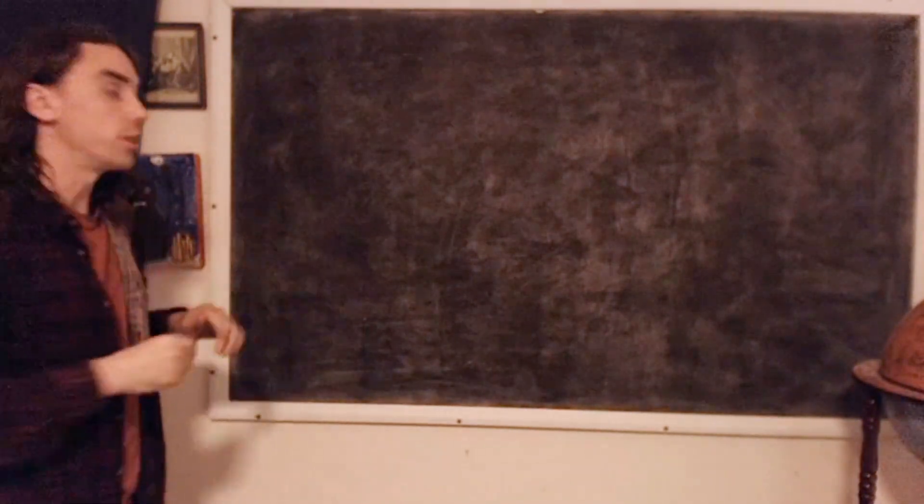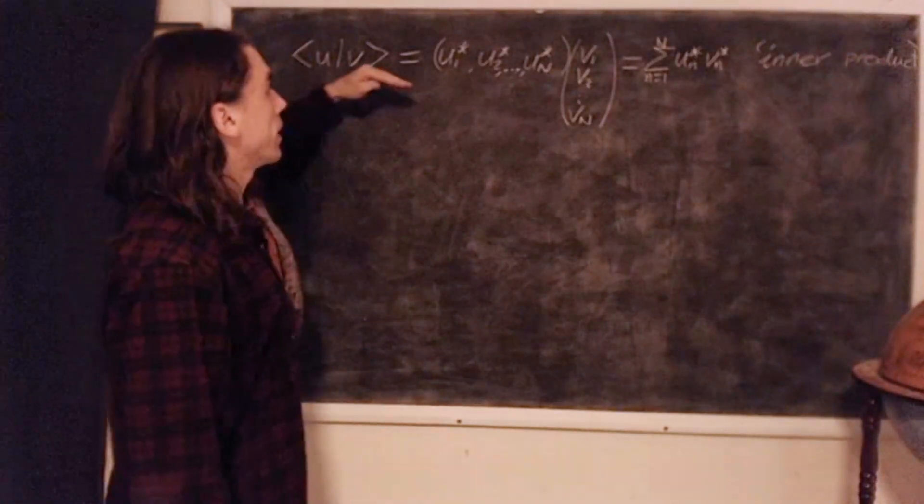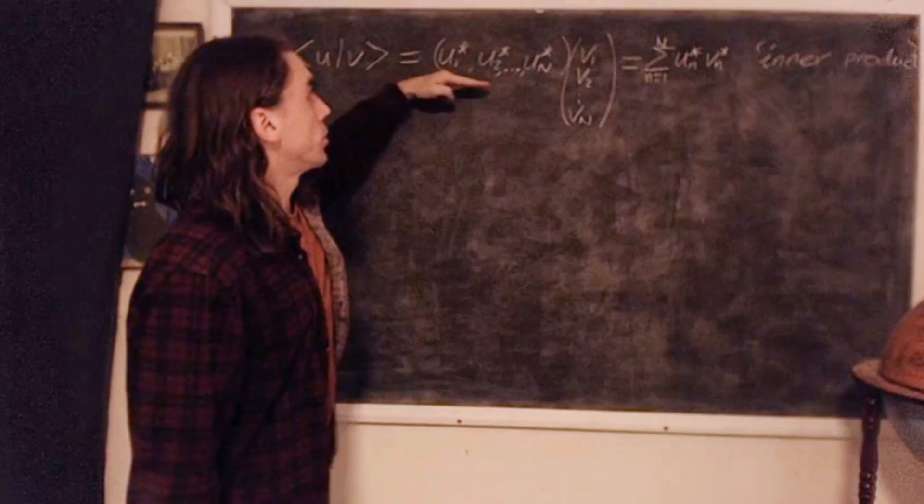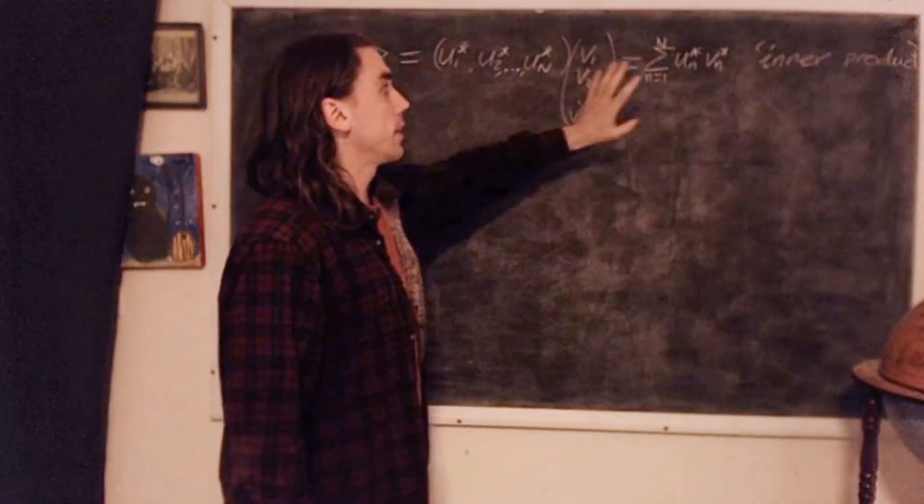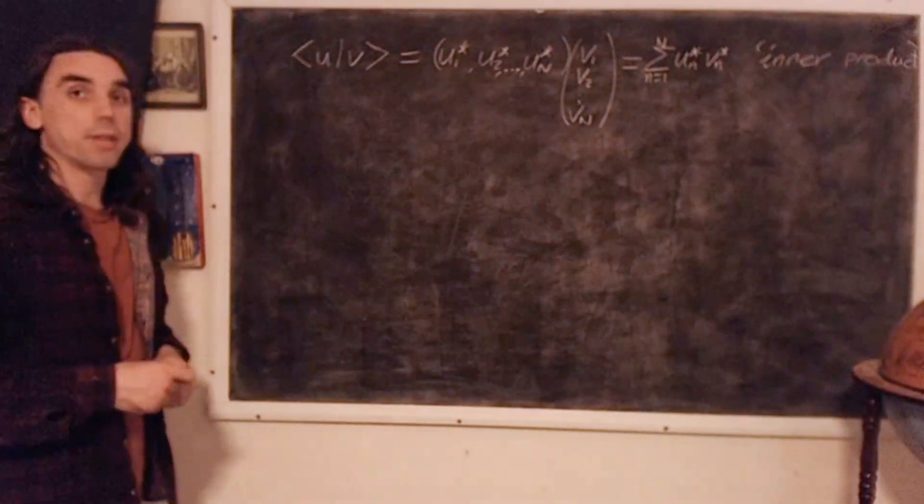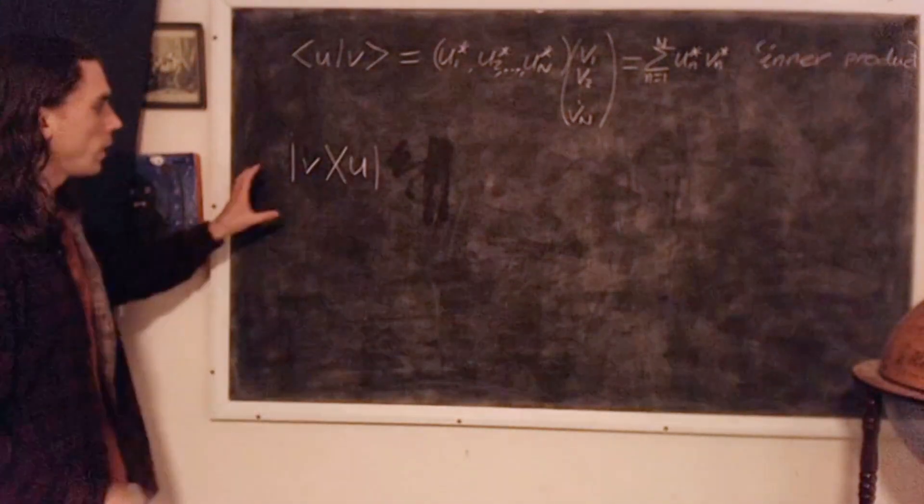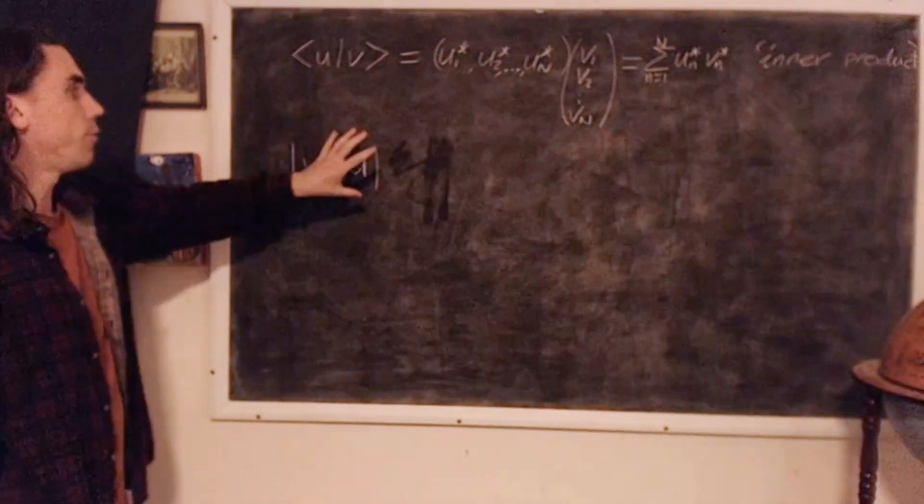Okay, so we've taken a look at the inner product. And we saw that, so we write the complex conjugate row vector here, conjugate transpose, multiplied by the vector gives us a complex scalar, which is the inner product. How about this object?